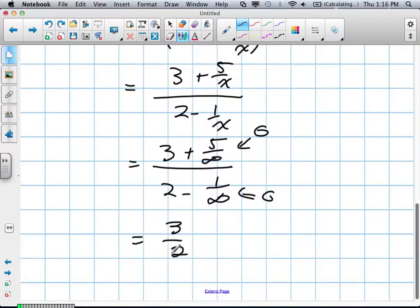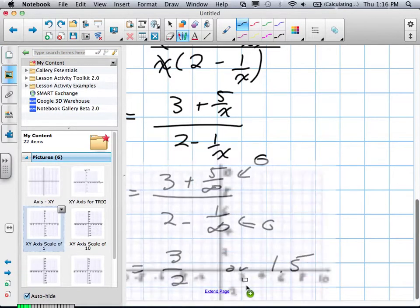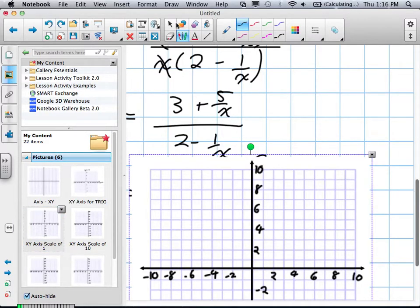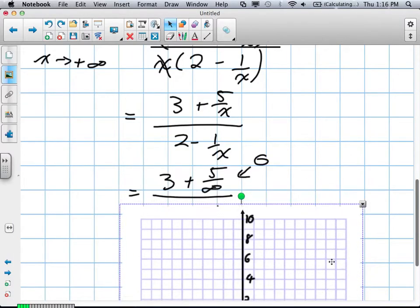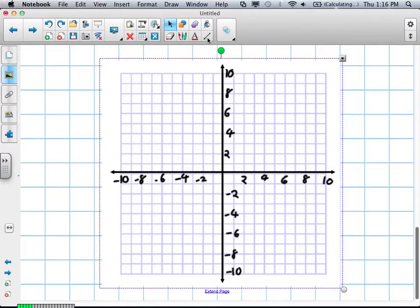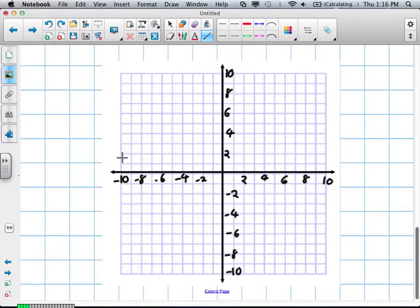So we've got to put that on a graph. We have a horizontal asymptote at 3 over 2, or easier for a graph, 1.5. Let's put up a graph here. We have an imaginary horizontal line cutting through about 1.5.